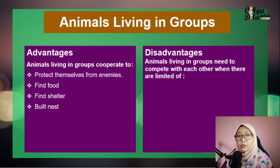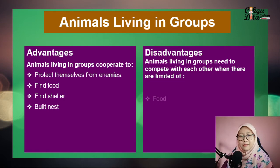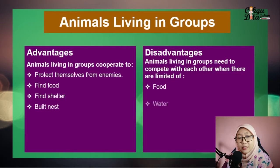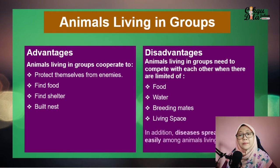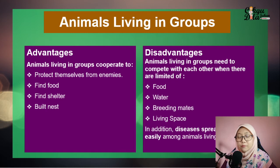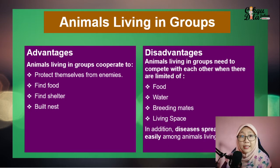Now the disadvantages. Animals that live in a group need to compete with each other when there are limited basic needs, such as food, water, breeding mates, and living space. Also, if there is a disease, it can spread easily among them because they live close to each other.